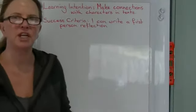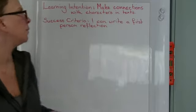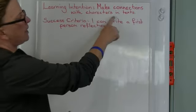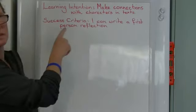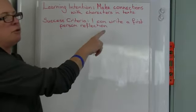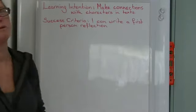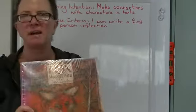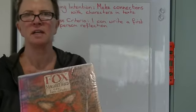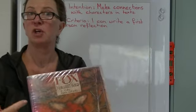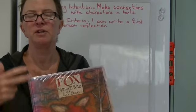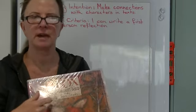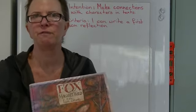Hi everybody, this is Miss J and today we are going to learn about making connections with characters in texts. Your success criteria is that you'll be able to write a first person reflection from the text 'The Fox.' Now as you may recall, there are three characters in The Fox: there's Fox, there's Dog, and there's Magpie. You can choose to write about any of those characters, but you do it using their own voice.